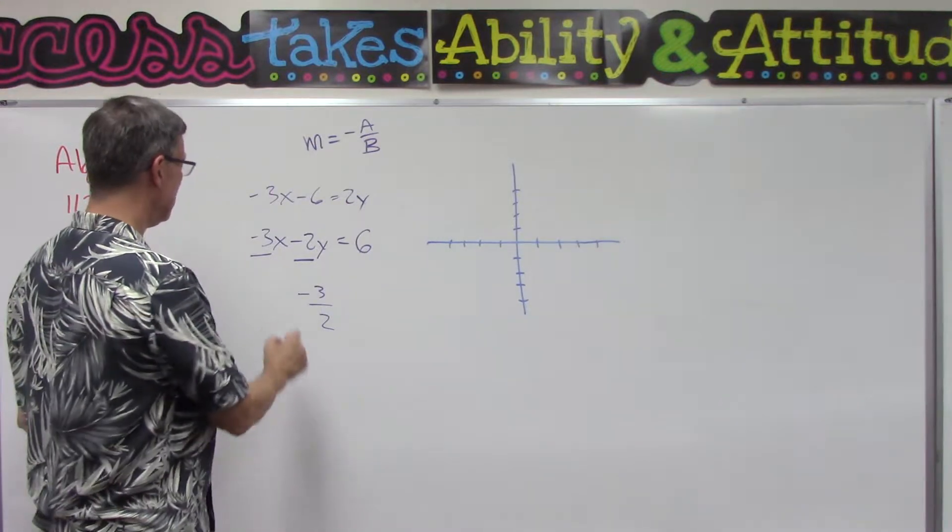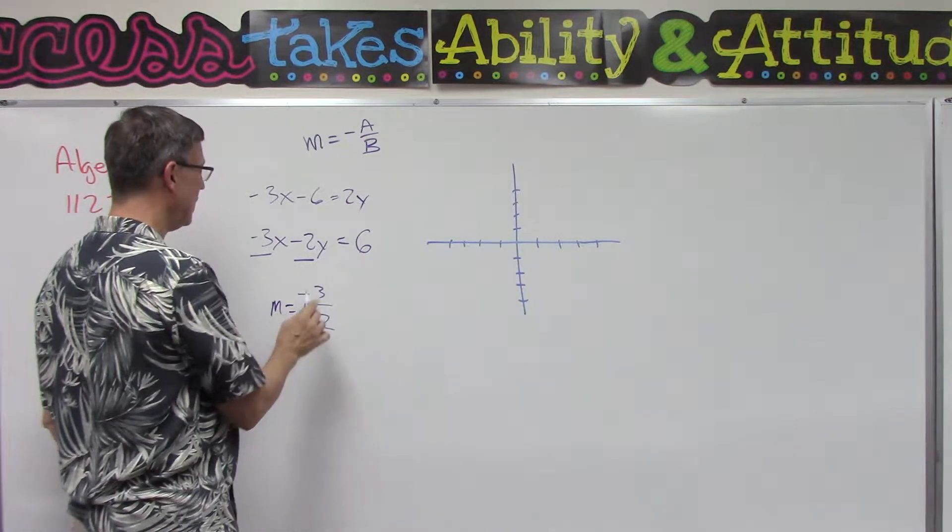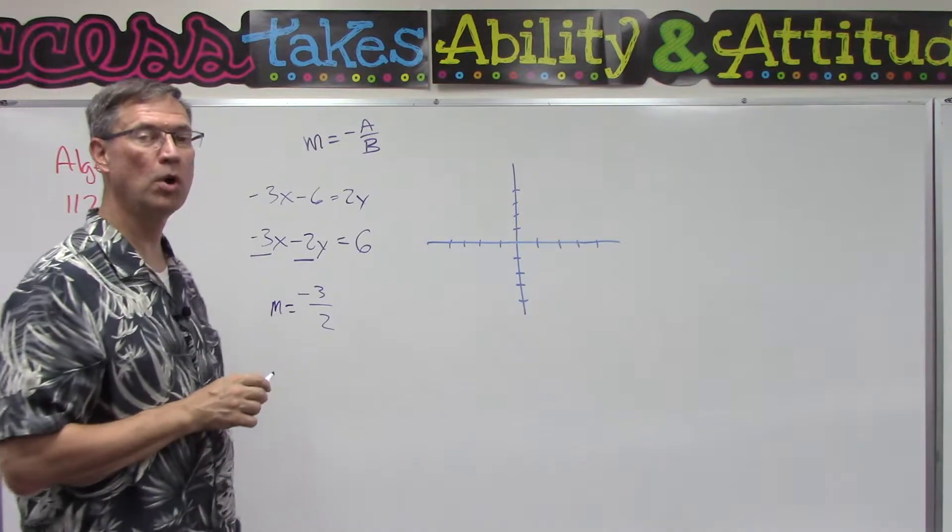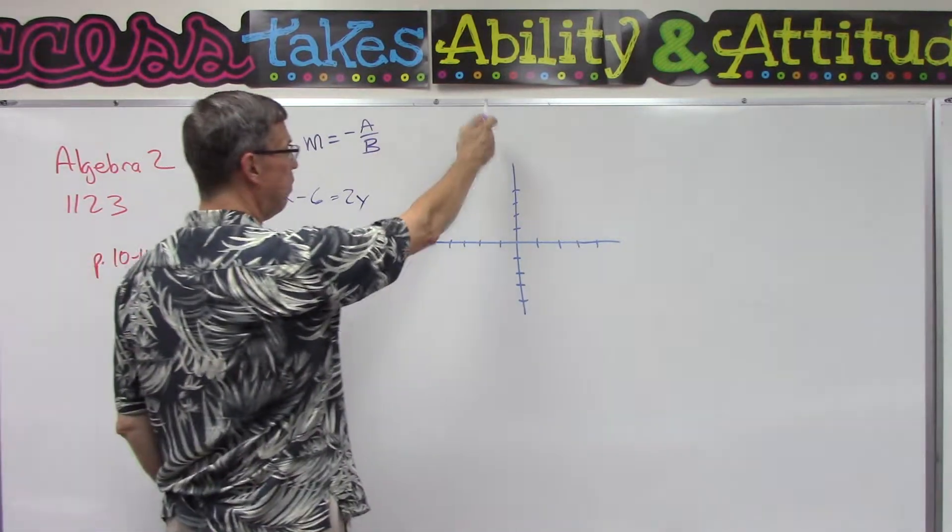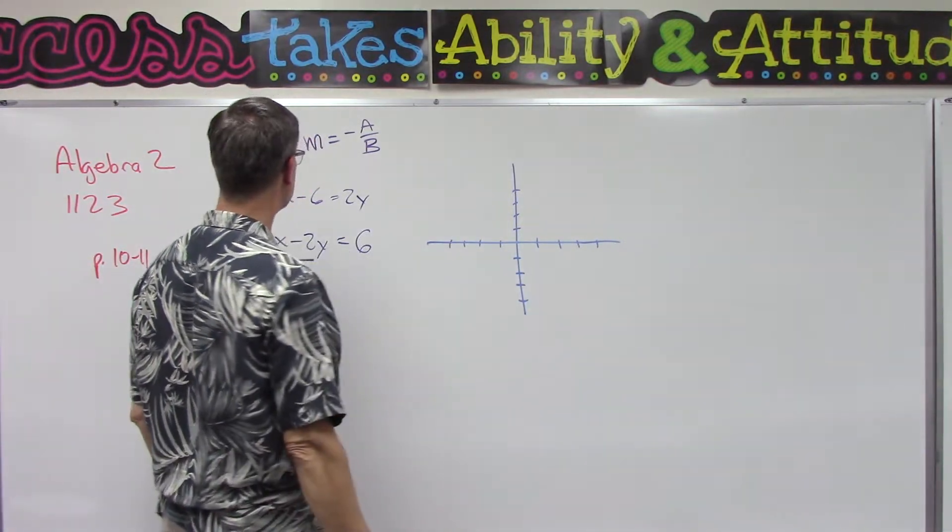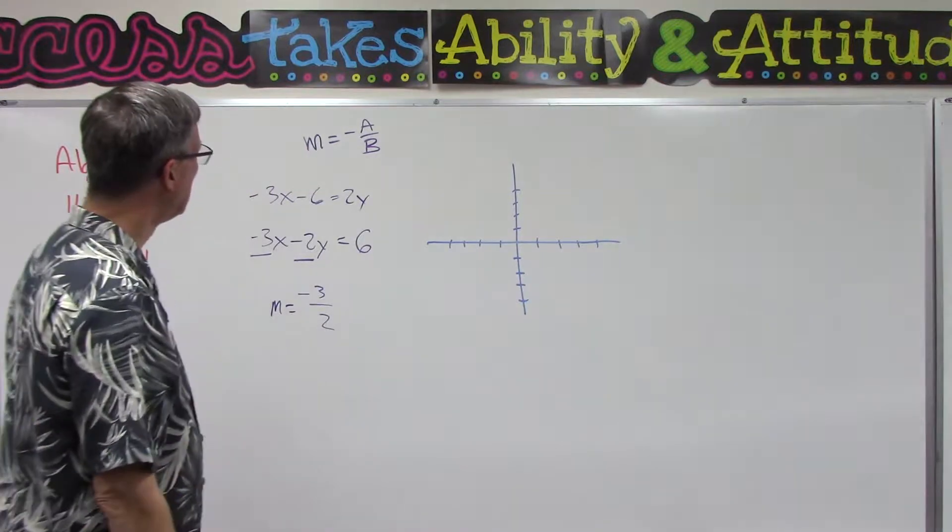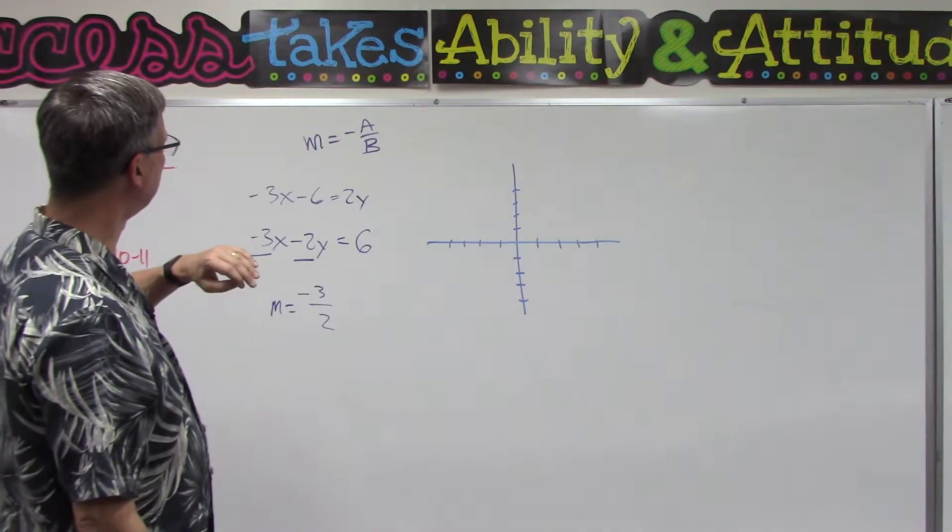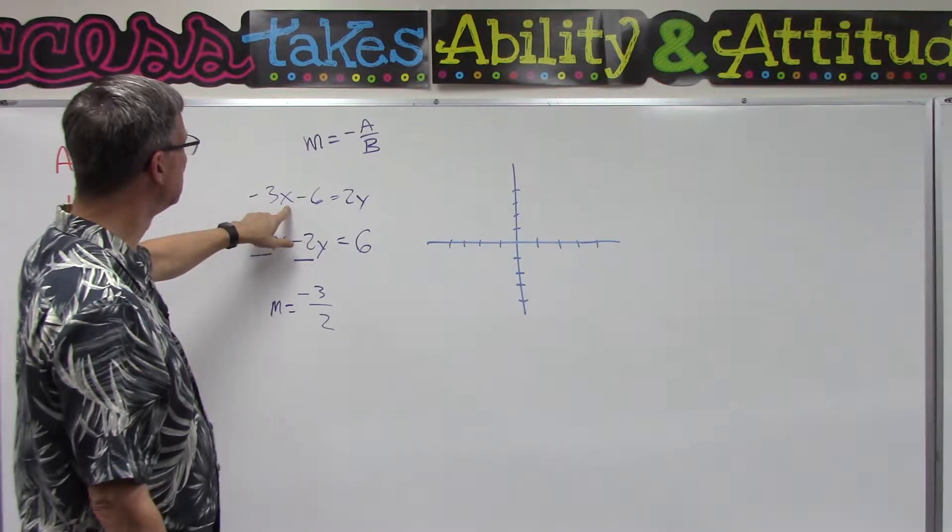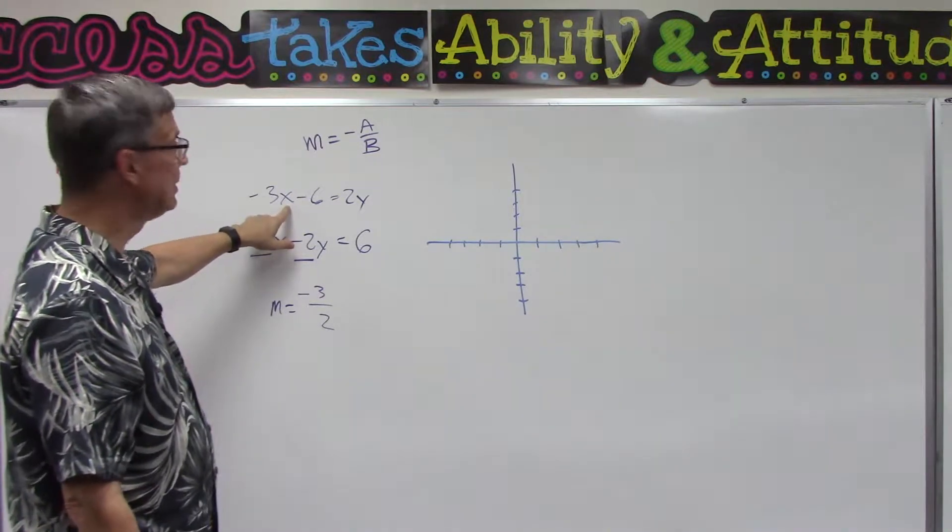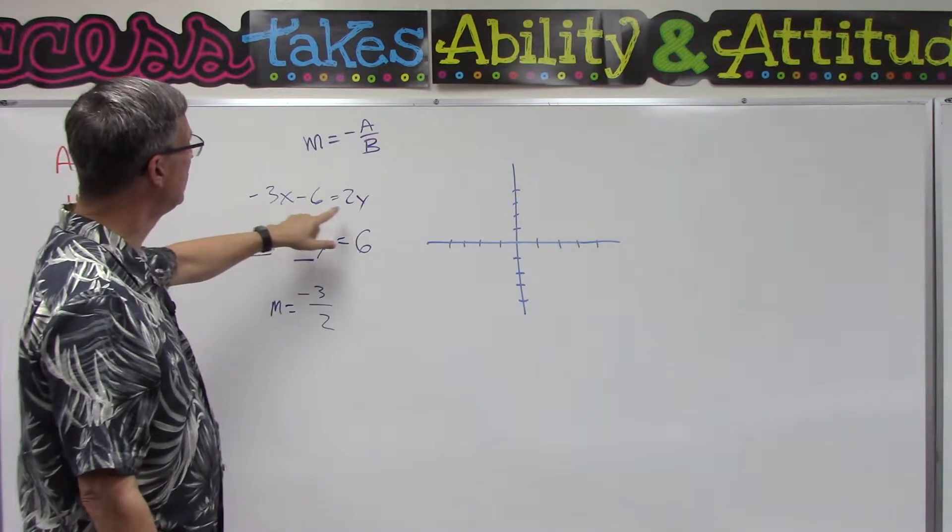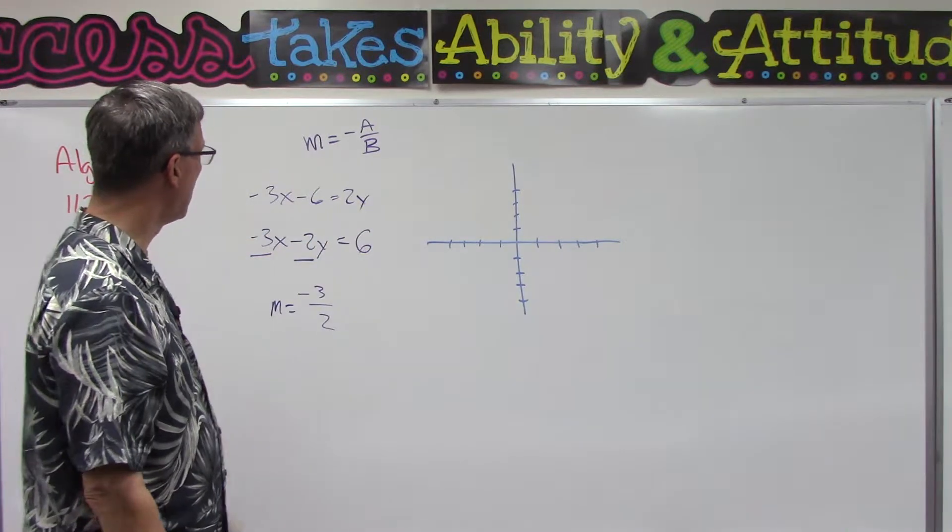Okay, so we have one of the things, and that is the slope. But we're not done. Now we need to find where does it cross the y-axis. The way we find that out is we plug in 0 in place of x, and then we solve to figure out what would y be.